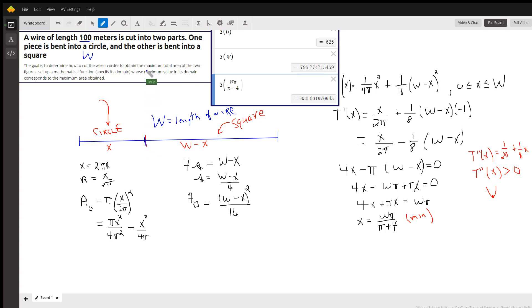A circle and a square. So I've chosen, here's the wire length w. I've chosen to let x be the length of the wire that's going to be turned in or bent into a circle, so w minus x is the length of the wire that's going to be bent into a square.